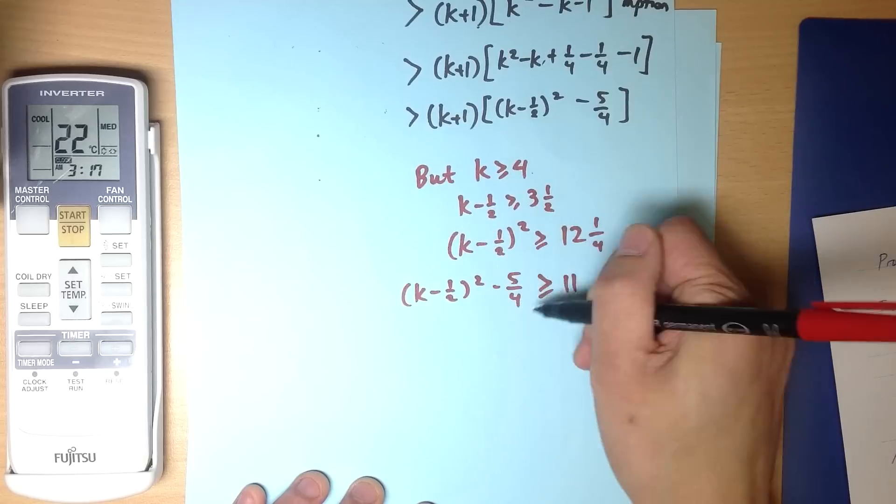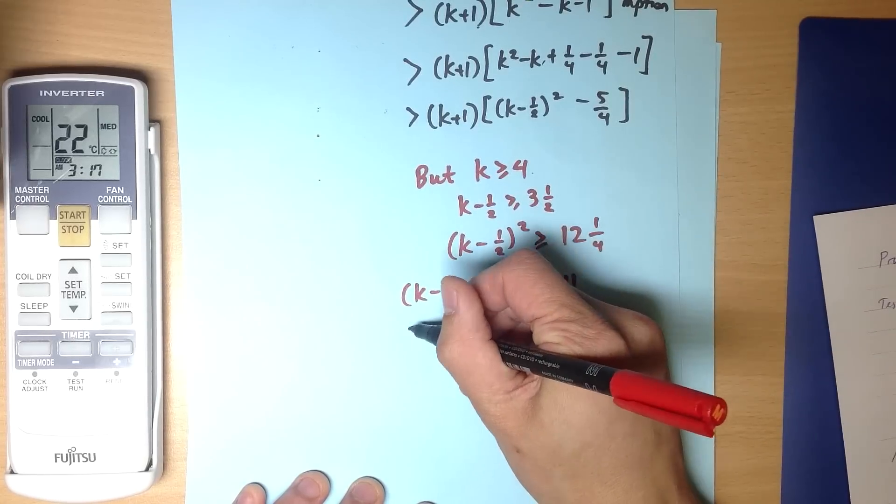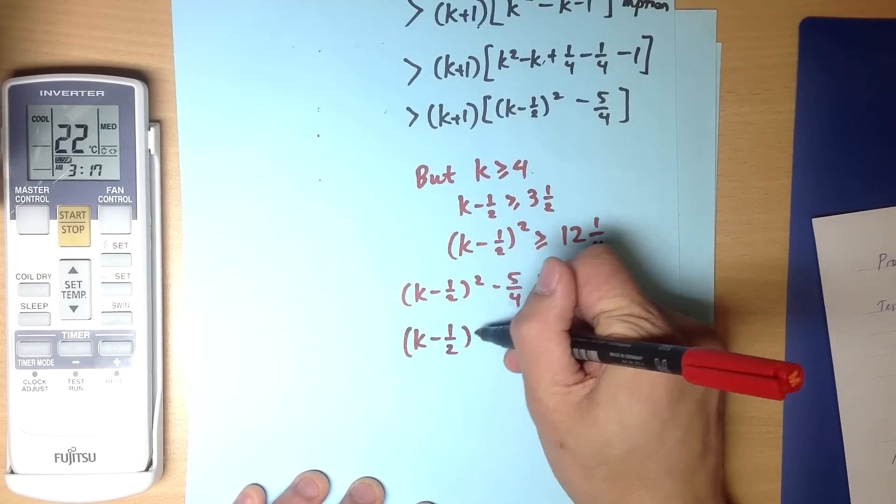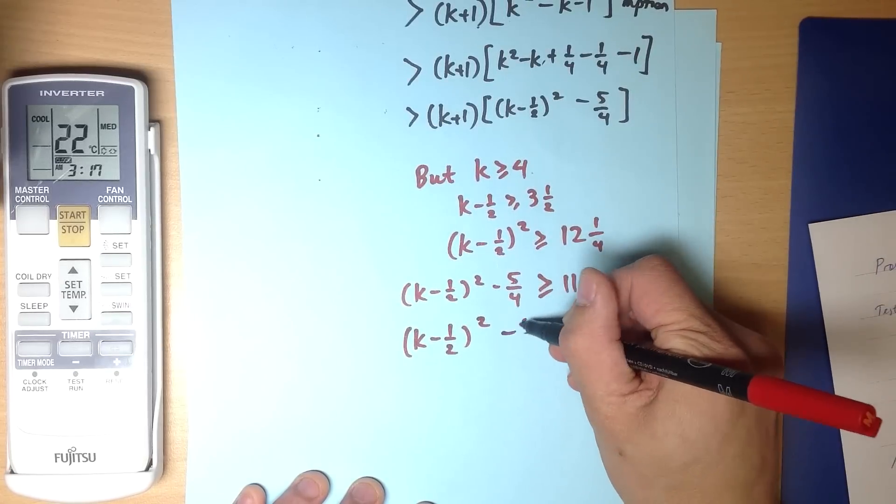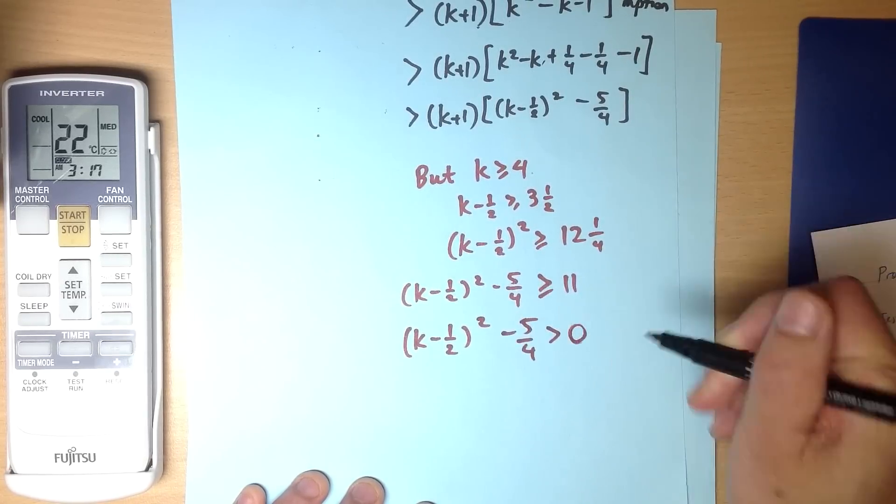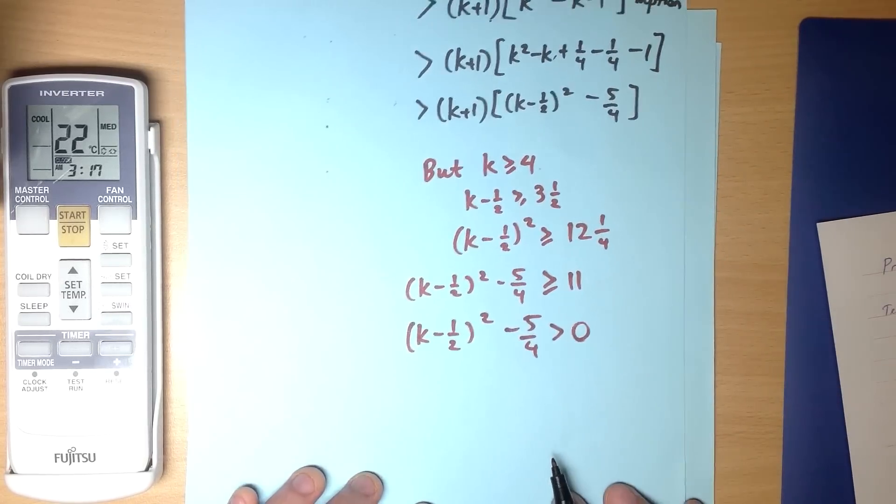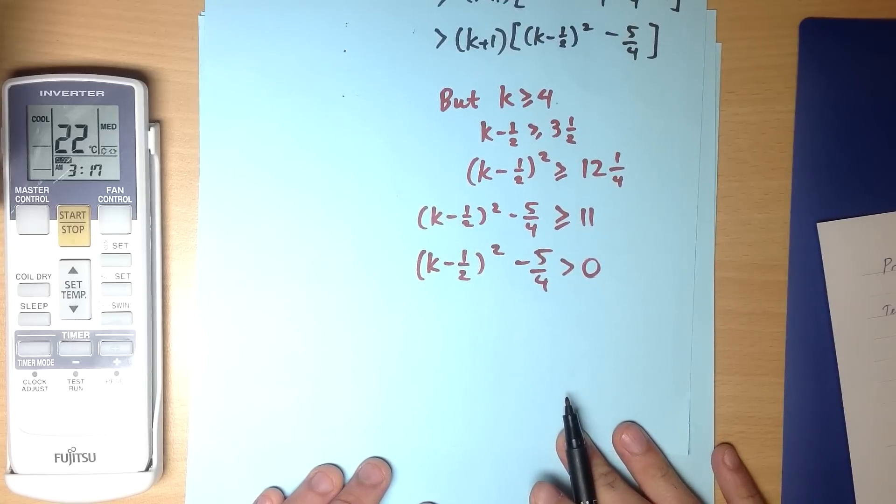Therefore, this number certainly must be positive. (k - 1/2)² - 5/4 surely is greater than 0, because it's greater than 11, which is way bigger than 0.